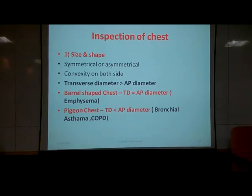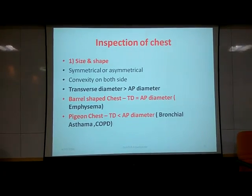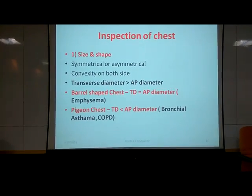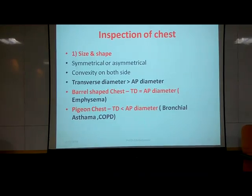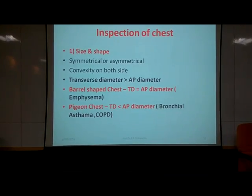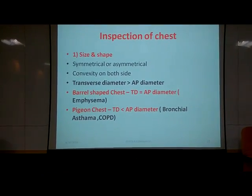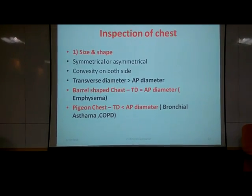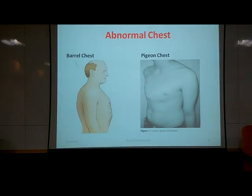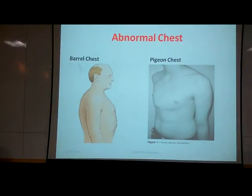Regarding size and shape, we look for symmetry or asymmetry and whether there is convexity on both sides. In the normal physiological condition, the transverse diameter should be greater than the anteroposterior diameter. But in pathology like emphysema, there will be a barrel-shaped chest, where the transverse diameter equals the anteroposterior diameter. In cases of bronchial asthma, the chest is called pigeon chest, where the transverse diameter is less than the AP diameter. Pictures show barrel chest and pigeon chest in pathological conditions.